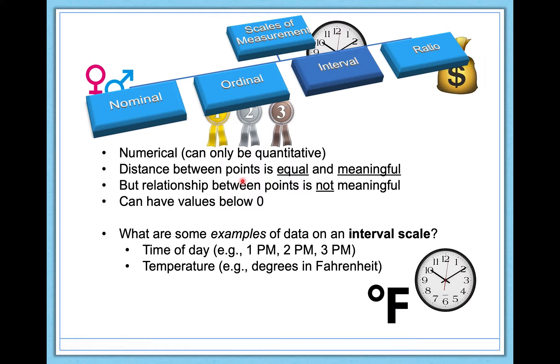The distance between points is equal. The difference between five and six degrees is the same as the difference between six and seven degrees. And that's meaningful—it's a one degree difference, a one degree difference in heat. And I can quantify that and that means something consistently. But the relationship between points is not meaningful. And again, this is the weirdest to understand, but I like to do a little test to determine this. Here's the test.